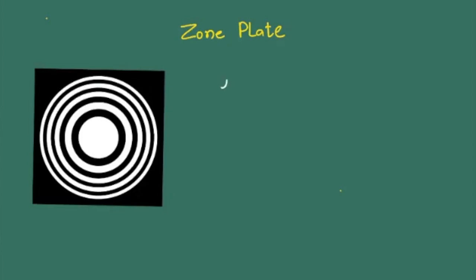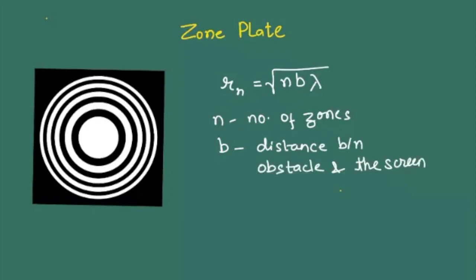Where n is the number of zones, b is distance between obstacle and the screen, and lambda is wavelength. This is also dependent on wavelength. As we change the wavelength, that will also affect our radius of the zone.